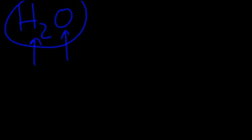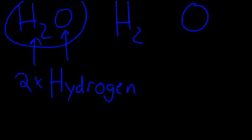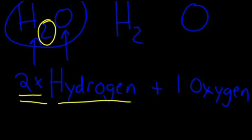H2O has two parts: the H2 and the O. The H2 stands for two hydrogen atoms — hydrogen is an element on the periodic table — and there is one oxygen atom. Every single molecule of water is made up of two hydrogen atoms and one oxygen atom. We use a subscript in H2O to show there are two hydrogen atoms, and there is no subscript for oxygen because there is already one oxygen.